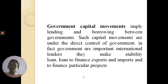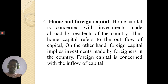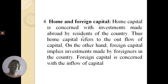On the other hand, government capital movements imply lending and borrowing between governments. Such capital movements are under the direct control of governments. In fact, governments are important international lenders — they make stability loans and loans to finance exports and imports and to finance particular projects. The fourth type is home and foreign capital. Home capital refers to investments made abroad by residents of the country, representing an outflow of capital.